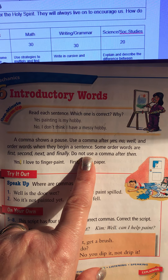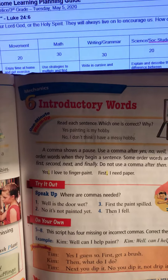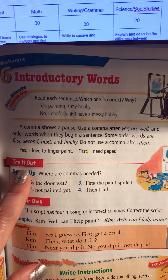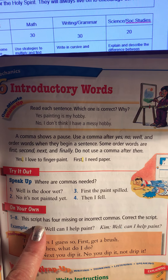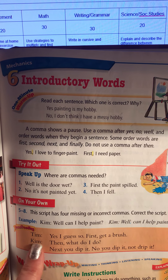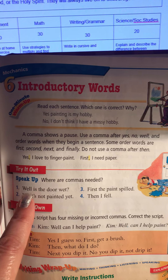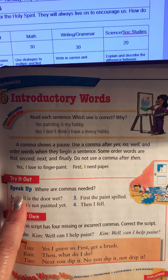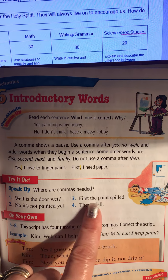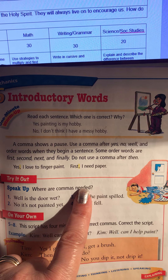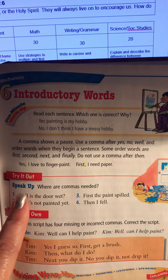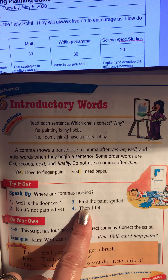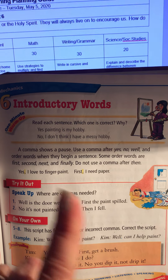I want you to work on that. When you do your work, you will be doing 'Try it out' and 'On your own.' 'Try it out' has just four sentences. You're going to rewrite these four little sentences, but put the commas where they're needed. Remember, we're talking about introductory words, and one of them doesn't get a comma.